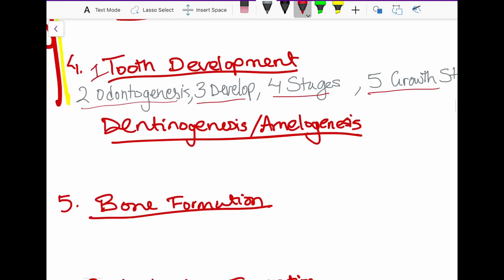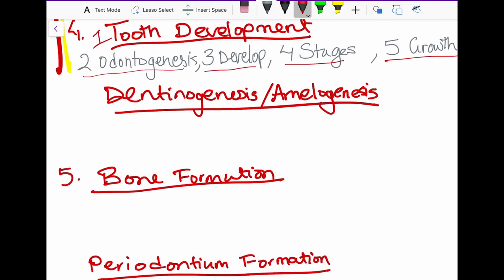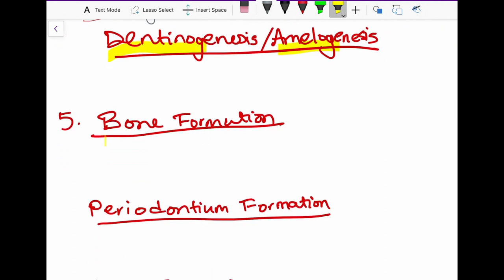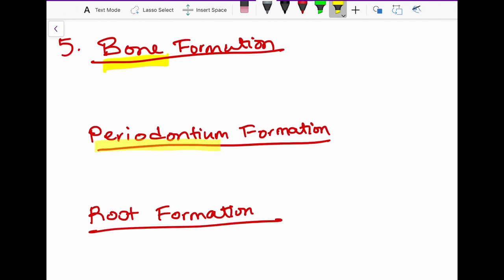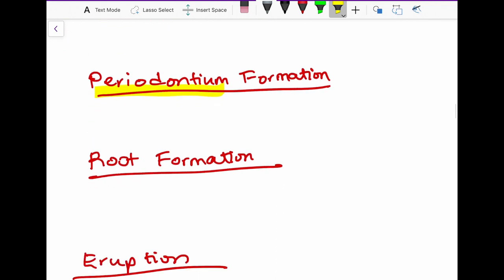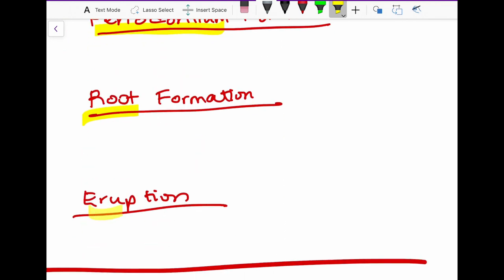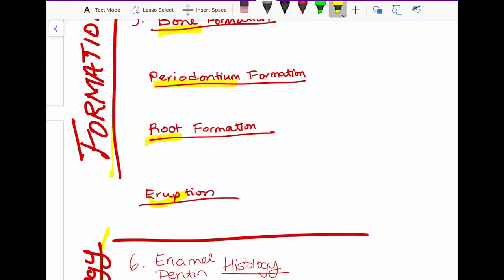Then we come into dentinogenesis and amelogenesis, which is basically making up of the dentin, and then making up of the enamel. Then we form the bone, then we form all the structures surrounding the tooth, we call periodontium, form the root, and then finally eruption. So that will be part one, exam one of our lecture series.